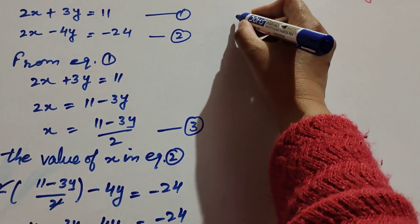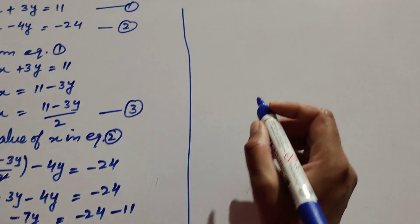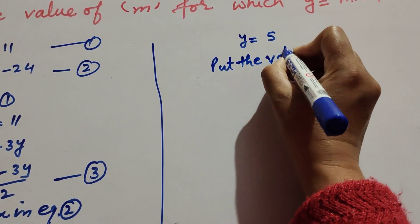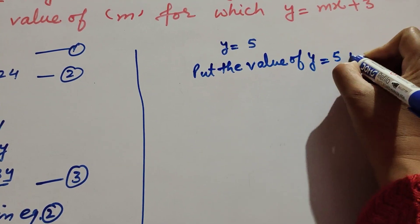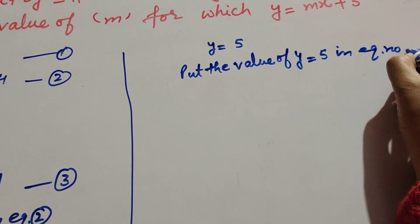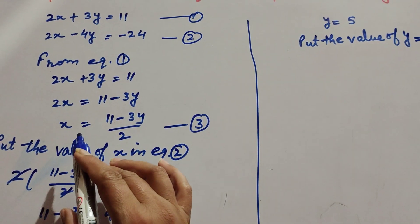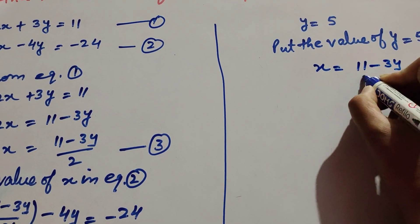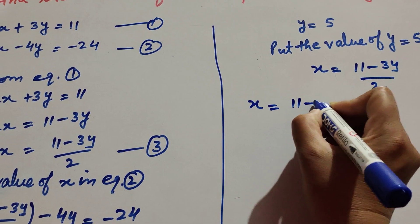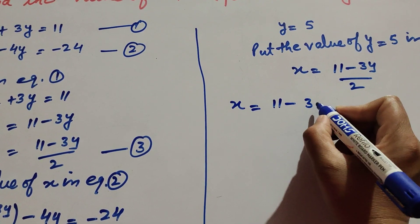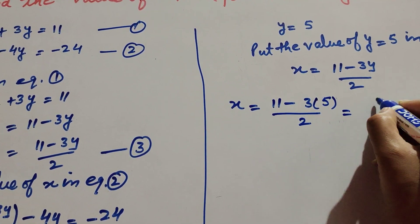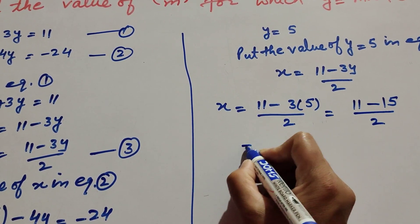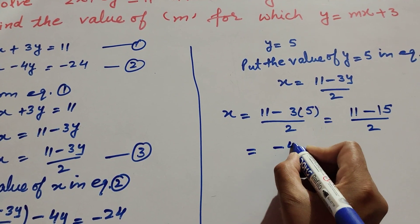Now we find the value of x. We have y equal to 5, and we put this value of y in equation number 3. Equation number 3 is x equal to 11 minus 3y over 2. So x equal to 11 minus 3 into 5 over 2, which is equal to 11 minus 15, giving minus 4 over 2.